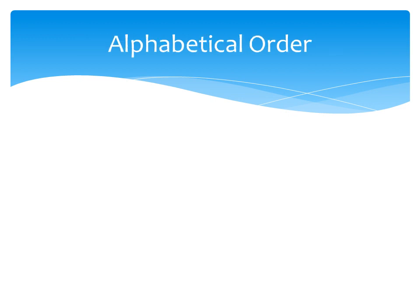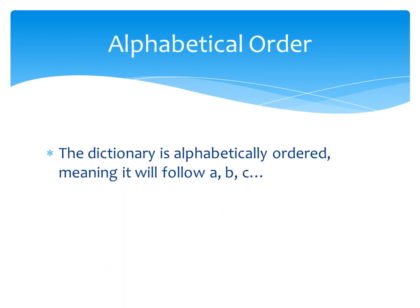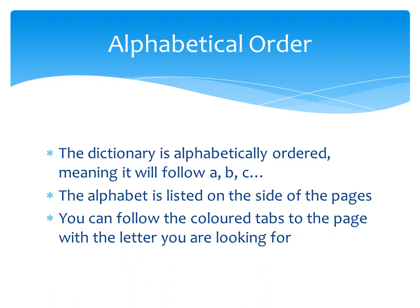But how do I find this word in the dictionary? By using the alphabet. The dictionary is organized in alphabetical order, so it is easy for you to find the words. When you open the dictionary, on the side of the page, you can see the alphabet listed. You can follow the colored tabs to the page with the letter you are looking for.